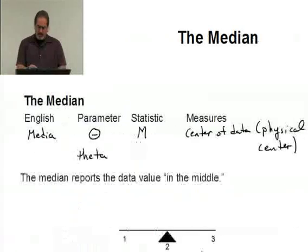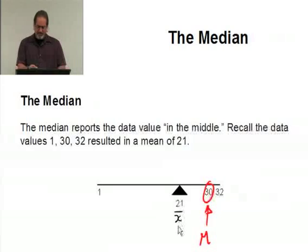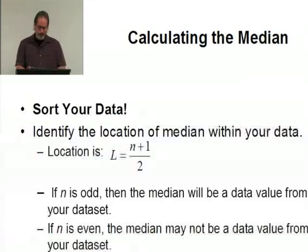Look back here. We said the mean was 21. Was 21 a data value? No. Our data values are 1, 30, and 32. 21 is not a data value at all. In this case, the number of data values is odd, there's three of them, and sure enough, the median was 30.